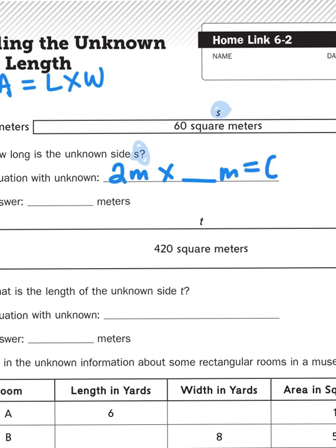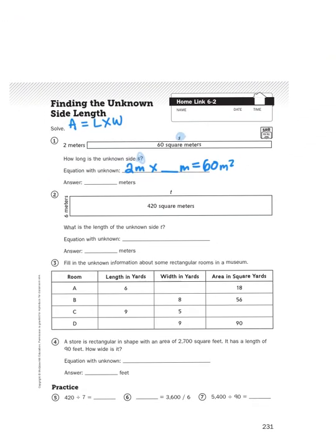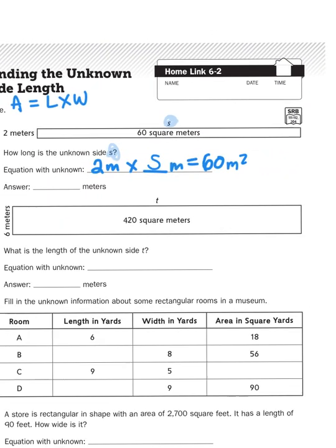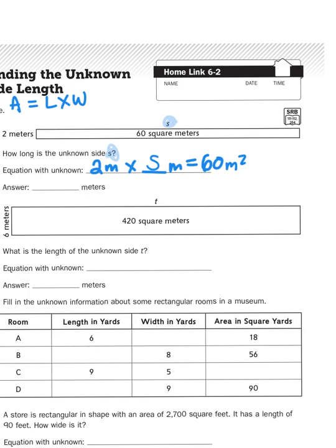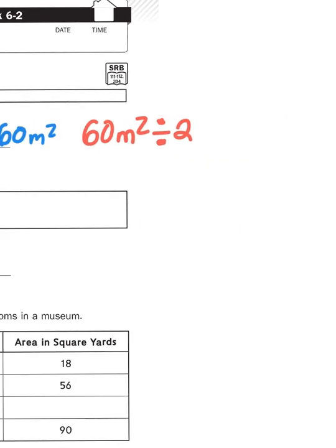I know that there is a 2 meter width times something, probably in meters, which is going to give me a total of 60 meters squared. Let's call that something s. That's a multiplication problem with a missing factor, but what we really want to do is turn this around and make it a division problem. We're going to make it 60 meters squared divided by 2 meters equals s.